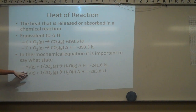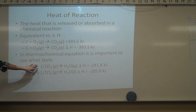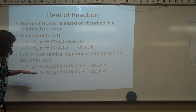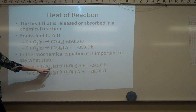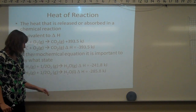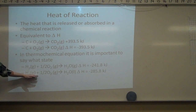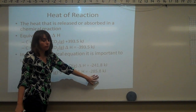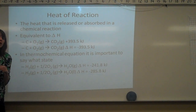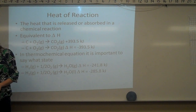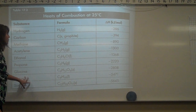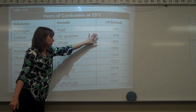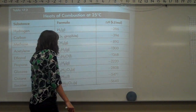In a thermochemical equation, it's also important to state what state of matter substances are in, because the numbers can be very different. For example, H2 gas and O2 gas making gaseous water gives negative 241 kJ, but making liquid H2O gives a different enthalpy value. These are the heats of combustion — different enthalpies you get when making combustion reactions.